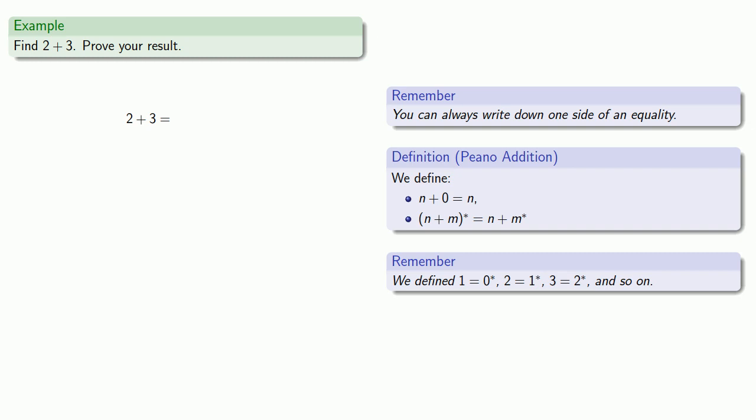So, 2 plus 3 is the same as 2 plus the successor of 2. Our definition does say this is the successor of 2 plus 2. And now, lather, rinse, repeat. 2 is the successor of 1. 2 plus the successor of 1 is the same as the successor of 2 plus 1.